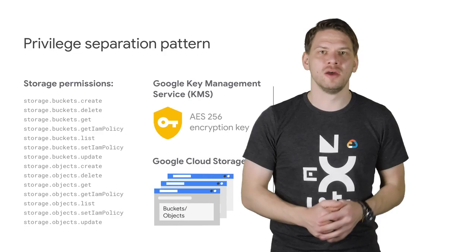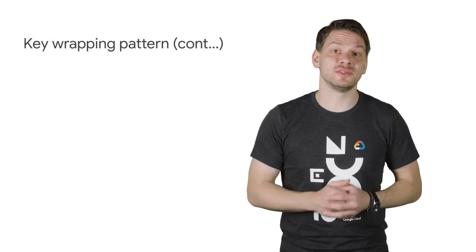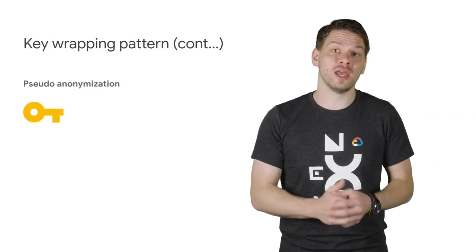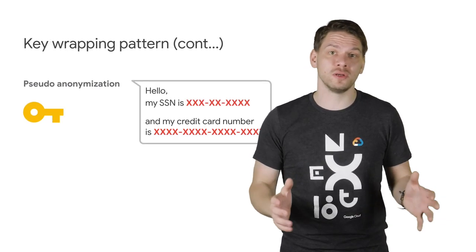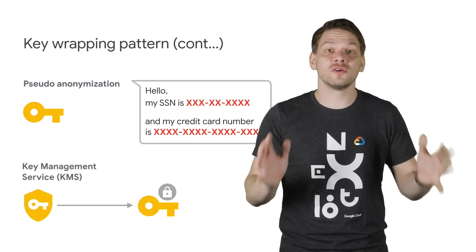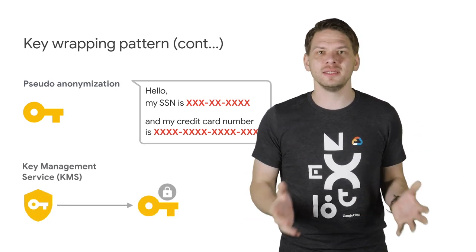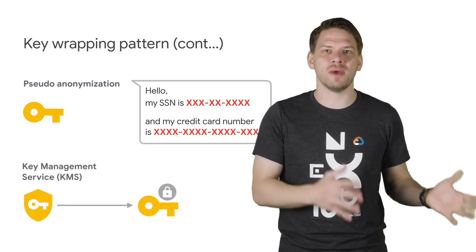Secondly, use that same KMS to help encrypt data at scale for pseudo-anonymization. For example, rather than sending files with sensitive info directly to KMS before storing them — which wouldn't scale — files are encrypted using a local encryption key, and then KMS is simply used to manage that key over time.